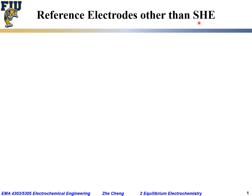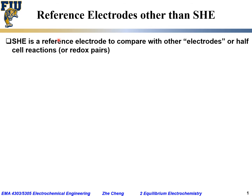Previously we talked about the SHE, or Standard Hydrogen Electrode. It is a reference electrode that we can use to compare with other electrodes or half-cell reactions and redox pairs, to determine the standard electrode potential for different electrode reactions against the SHE. From this, we can construct cells and gather other useful information.